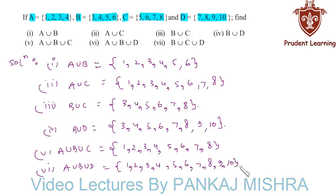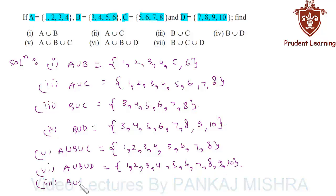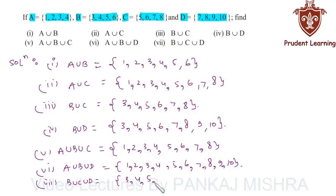Finally we need to find B union C union D. This will be a set that contains all the elements that are either present in B or in C or in D. So this is equal to {3, 4, 5, 6, 7, 8, 9, 10}. This completes our solution.